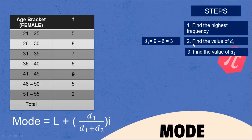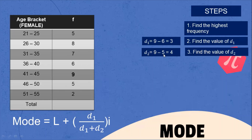Next step, find the value of D₂. D₂ is the highest frequency minus the frequency below it. That is 9 minus 5, which equals 4. So D₂ = 4.